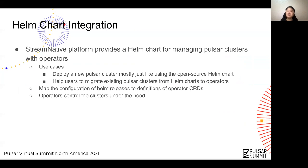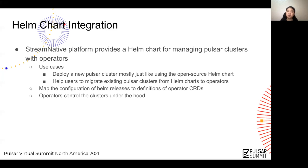One more thing is Helm chart integration with operators. Stream Native Platform provides a Helm chart for users familiar with Helm who would like to use Helm charts rather than CRDs to manage clusters directly. It helps users deploy a new Pulsar cluster mostly just like using the open-source Helm chart, or it can help users migrate existing Pulsar clusters from Helm charts to operators. In both cases, the operators take control of the clusters under the hood, and the configurations of the Helm release are mapped to the definitions of the operator CRDs.